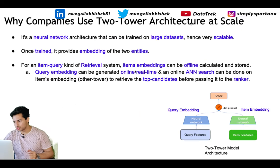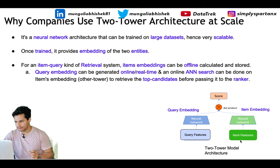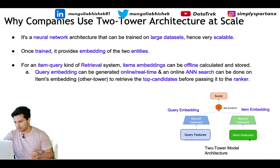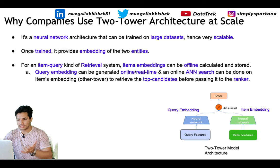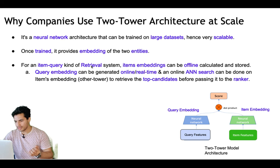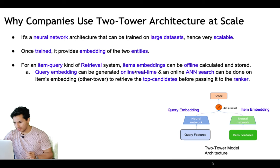Companies use two-tower model architectures at scale because it's a neural-network-based architecture that scales well and provides embeddings of the two entities. Even for items not seen during training, it can still generate a representation — an embedding — for them. Once the two models are trained for an item-query type of retrieval system, the item embeddings can be calculated offline.